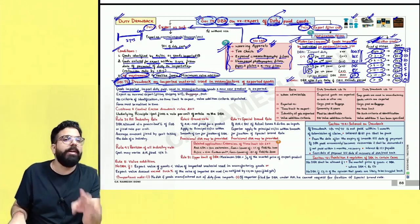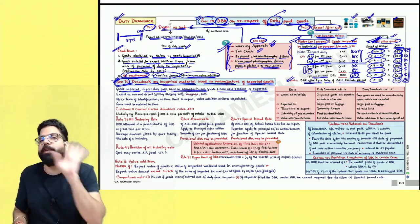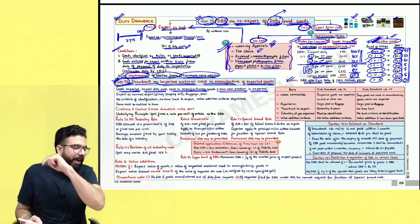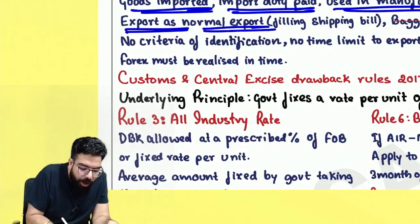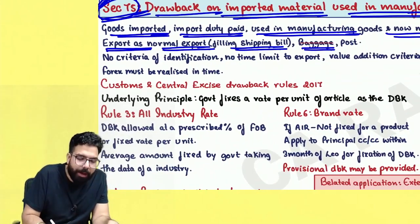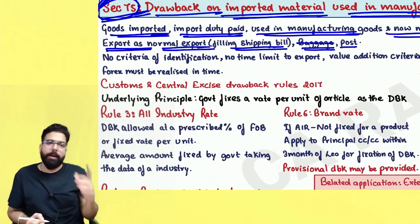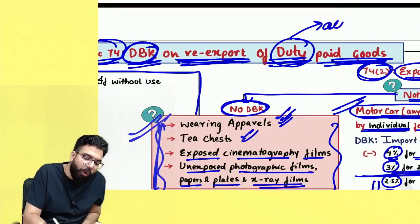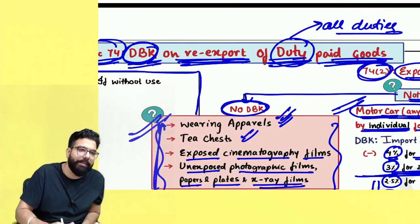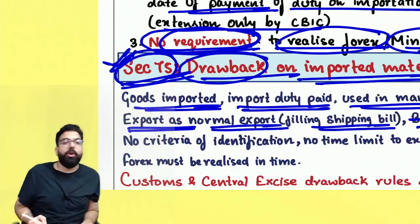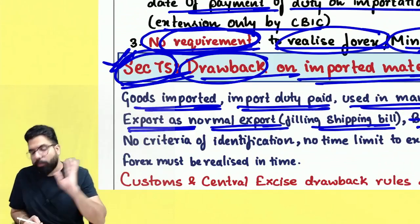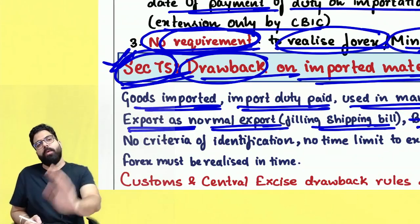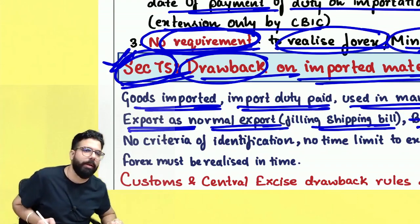Under section 75, you can export as normal cargo by filing a shipping bill or by post, but baggage is not allowed. Under section 74 you get duty drawback of all duties including IGST and GST compensation cess, but under section 75, GST is not included since you must take input tax credit. All other duties paid on raw material are eligible for duty drawback under section 75.